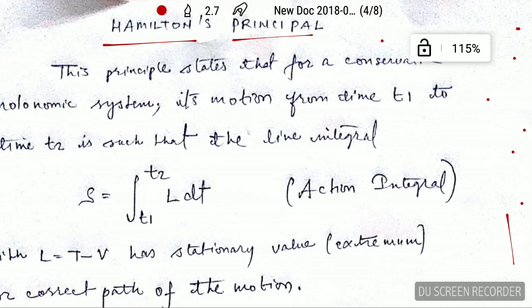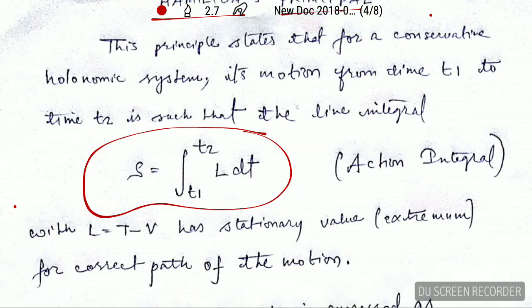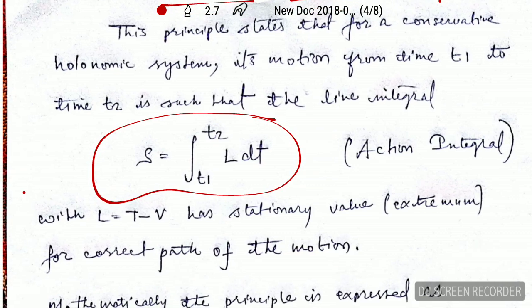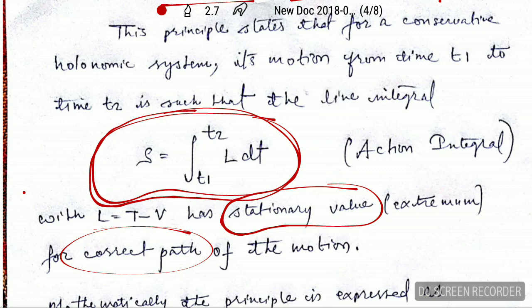According to Hamilton's principle, this action integral for the motion of the system has a stationary minimum value for the correct path. The action integral is constant for the actual path and has the minimum value.